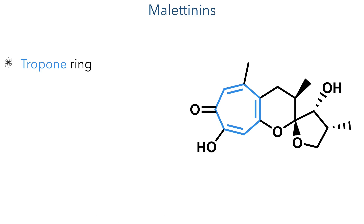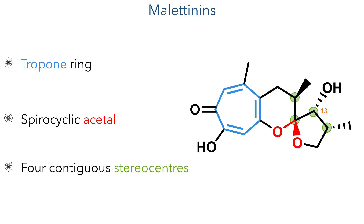Though the compounds are relatively small, the structures are quite interesting as they contain a seven-membered tropane ring fused to a six-membered pyrone, which is joined to a five-membered ring via a spiracyclic acetal. These two saturated rings bear four contiguous stereocenters, and it is the stereochemistry of carbon-13 that differentiates malatinin C and E.